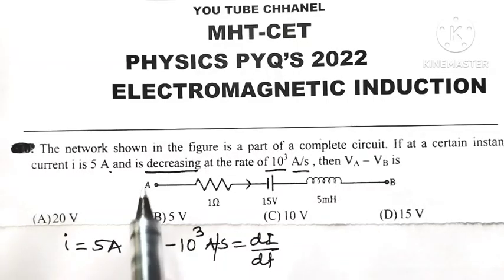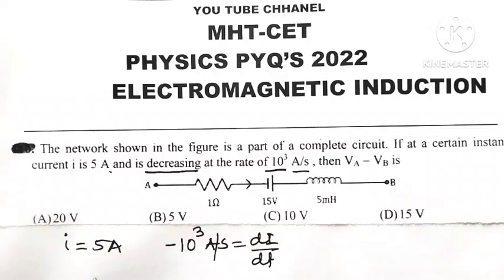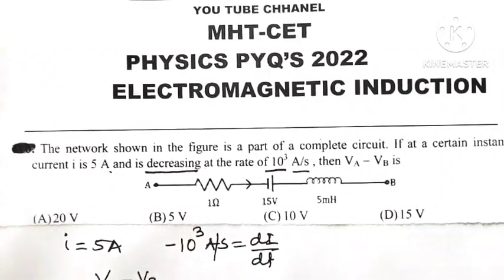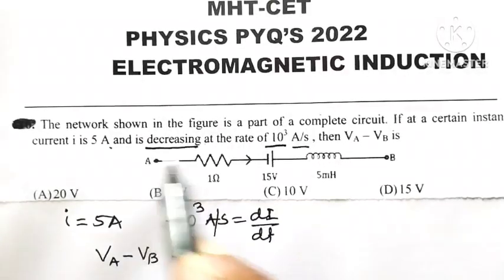Then VA minus VB means we have to find out the potential difference between point A and that of B. So VA minus VB is equal to, according to Kirchhoff's voltage law, VA minus VB is equal to, see here,